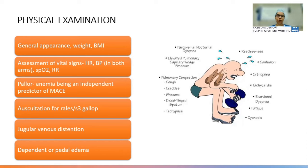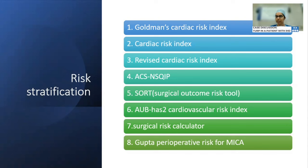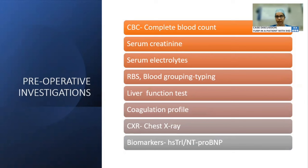On physical examination, we focus on signs and symptoms of congestive heart failure. Anemia is an independent risk factor for major adverse cardiac events, so pallor must be particularly noted. For risk stratification, various cardiac indices can be used as covered in the previous talk. For preoperative investigations, we request complete blood count, renal function tests, liver function tests, random blood sugar, blood grouping and typing, coagulation profile, biomarkers when indicated, and chest X-ray.